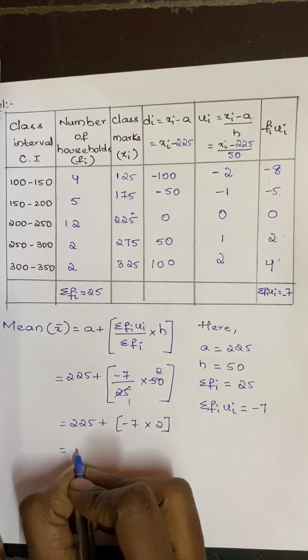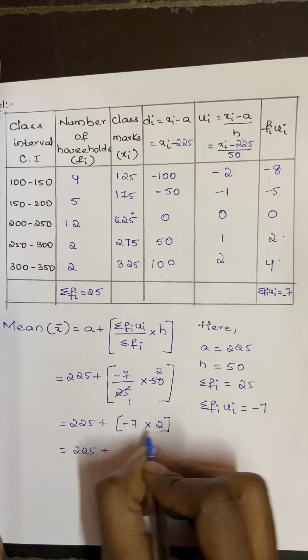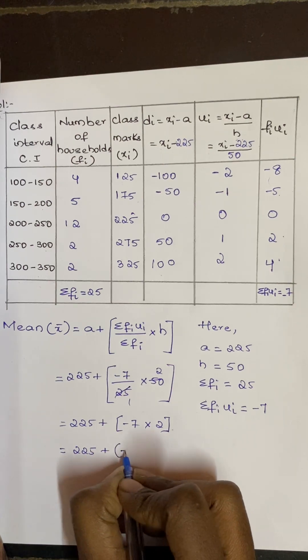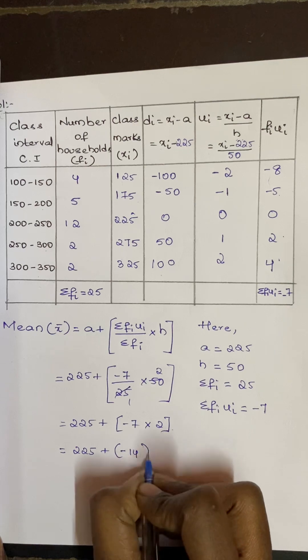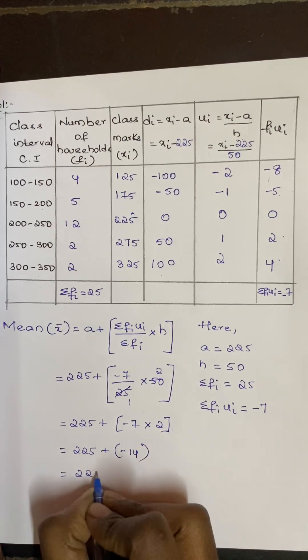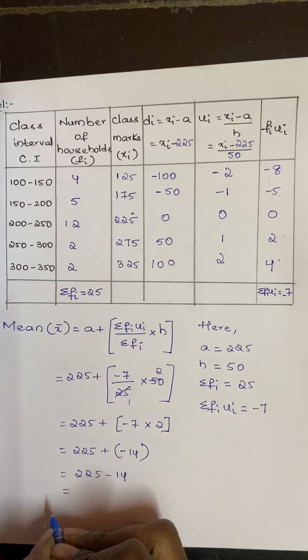That is 225 minus 14. What is 225 minus 14? 211.